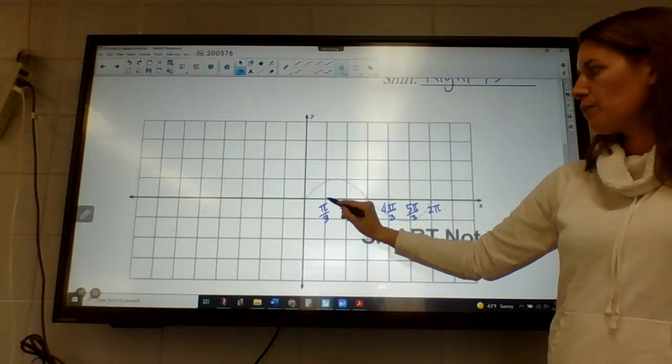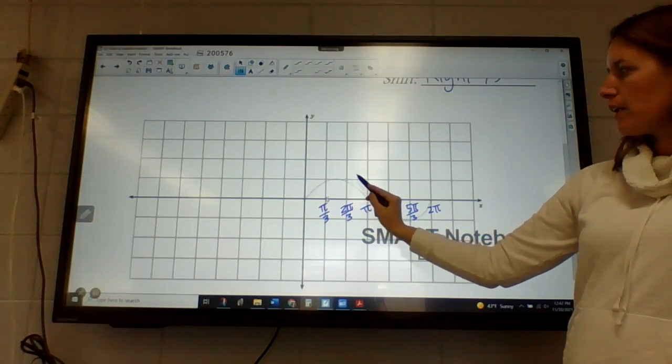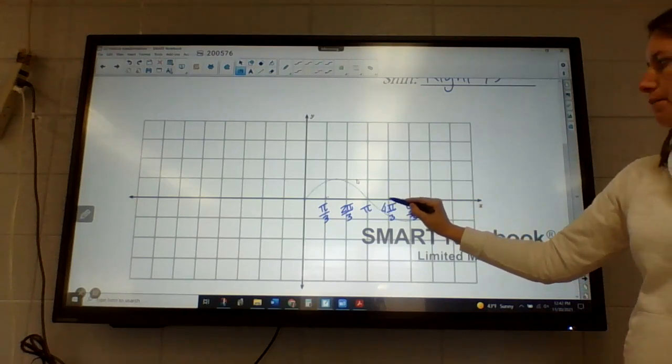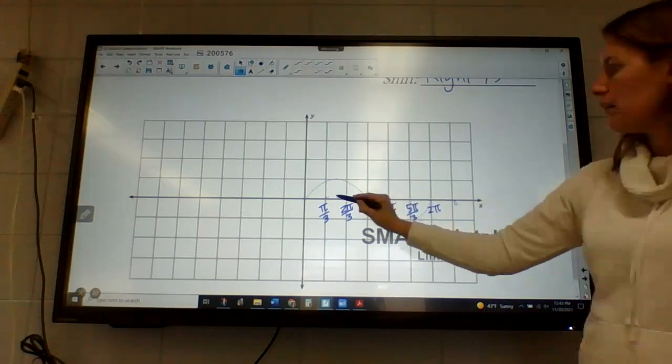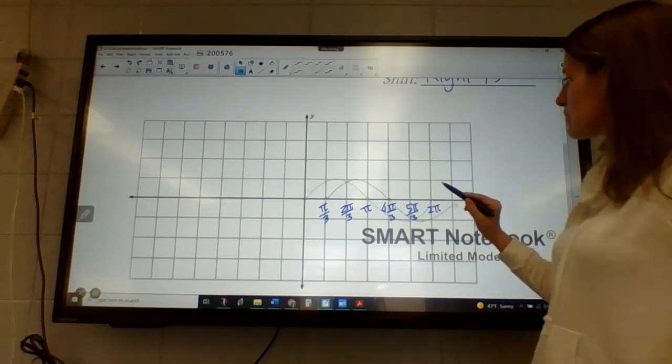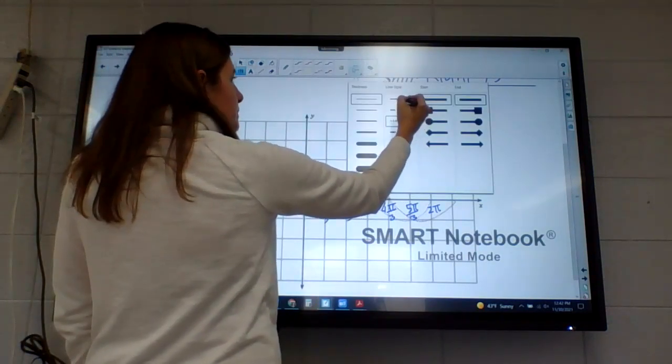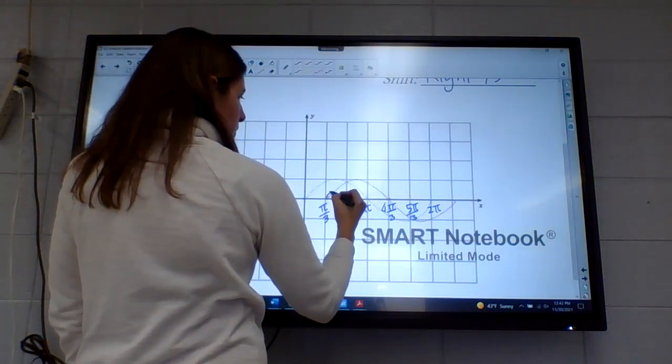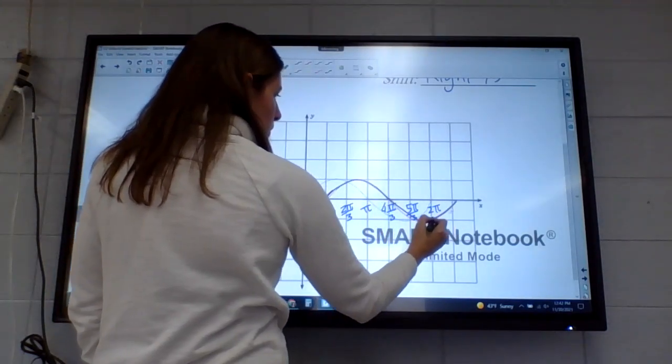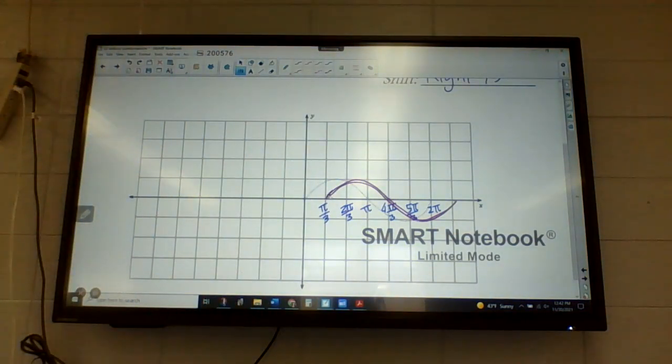So I'm going to take zero, shift it right pi over three. I'm going to take this point and go right pi over three. So just basically another space over. Right pi over three. All of these. Just regular line.